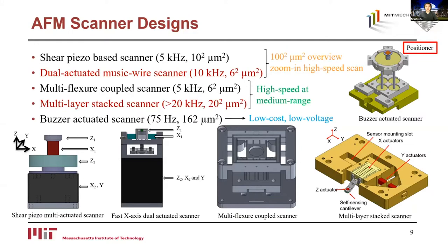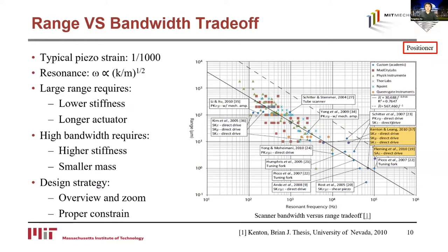AFM nanopositioner design is the key to enabling versatile imaging. The fundamental limitation in scanner design is the range-and-bandwidth trade-off. To realize a large scan range, lower stiffness and longer actuators — and therefore larger mass — are needed. However, to achieve high bandwidths, higher stiffness and smaller mass are required. This is illustrated in a log-log plot of bandwidth versus range for a number of scanners from the literature. To overcome this challenge, two approaches can be taken: the overview-and-zoom method using multi-actuation, and properly constraining the piezo actuators so that unwanted resonance modes are not excited.